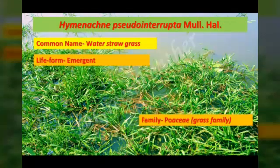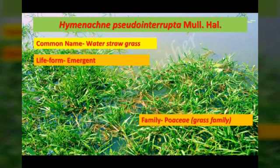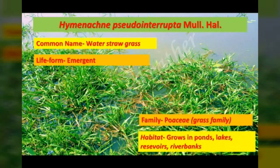Hymenachne pseudointerrupta, commonly known as water straw grass, is a member of the grass family. It is a perennial stoloniferous freshwater grass forming monospecific stands in seasonally flooded environments of tropical and subtropical warm climatic zones. It commonly prefers open habitats such as lowland floodplains, marshes, ponds, isolated depressions, and the sunny marshes of rivers, lakes, and streams.